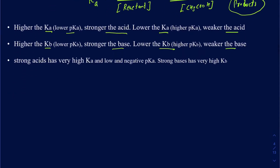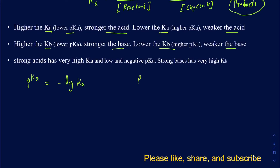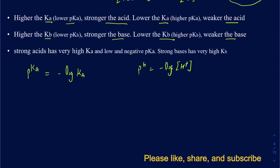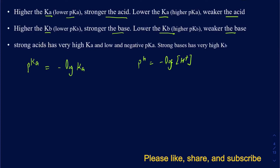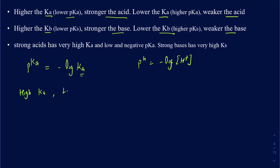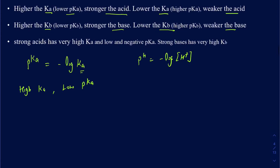How do Ka and pKa really relate? You can always figure out the pKa by taking the negative log of Ka, just like pH equals the negative log of H+ concentration. The pKa is calculated as negative log of Ka — so a high Ka gives you a lower pKa, and the lower the pKa, the stronger the acid.